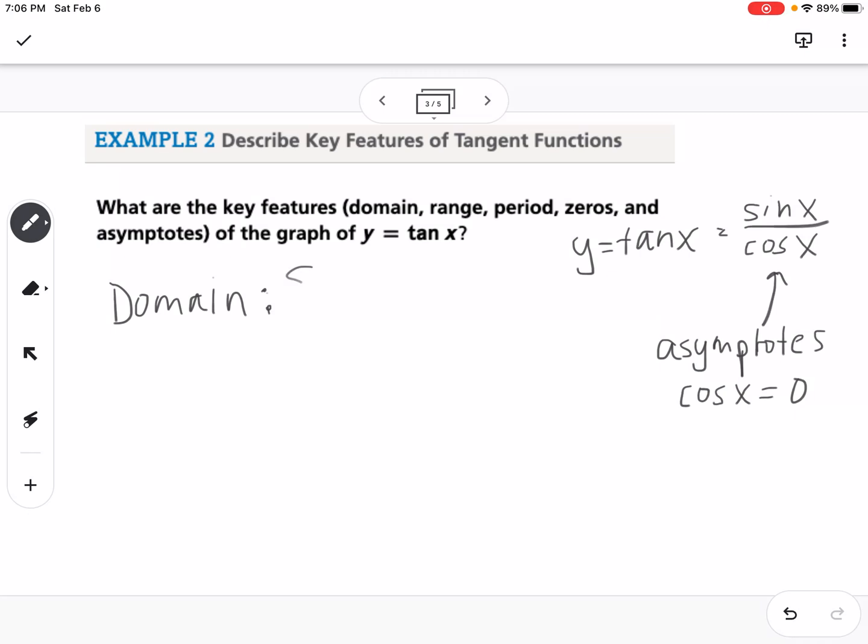So that's going to be, we can write this in set notation, x cannot be pi over 2 and any value of, so if we add pi or take away pi from pi over 2, so we're going to write it as n pi. So pi over 2 plus pi, plus 2 pi, plus 3 pi, or pi over 2 minus pi, all of those are going to give you your asymptotes.